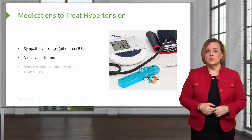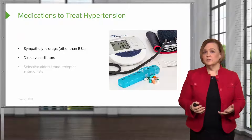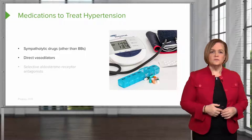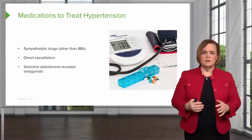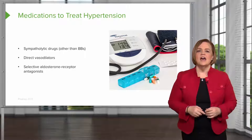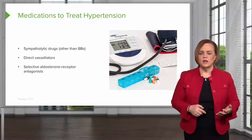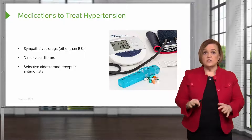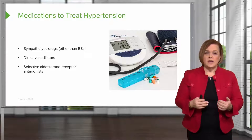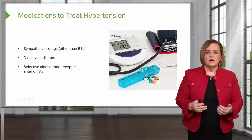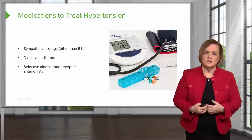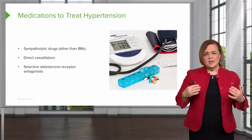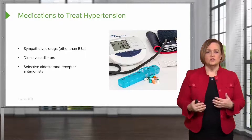Direct vasodilators are another group of medications used to treat high blood pressure — they directly vasodilate, resulting in lower blood pressure. We also have selective aldosterone receptor antagonists or blockers. The words antagonist and blocker are usually used interchangeably, so don't let that confuse you. Beta blockers and beta-adrenergic antagonists mean the same thing; selective aldosterone receptor antagonists and selective aldosterone blockers mean the same thing. That gives you an overview of the big groups of medication we'll be looking at across multiple videos.